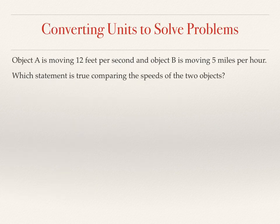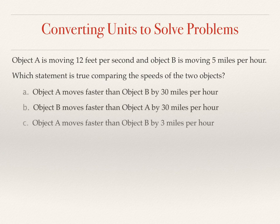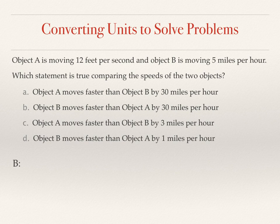In the next example, we'll convert units to solve problems. Object A is moving at 12 feet per second, and Object B is moving at 5 miles per hour. Which statement is true comparing their speeds? Rather than looking at the options right away, I think about prior knowledge — what does it feel like to be in a car going 5 miles per hour? That's pretty slow. Could someone traveling at 12 feet per second be at a comparable speed, or would one be faster or slower?